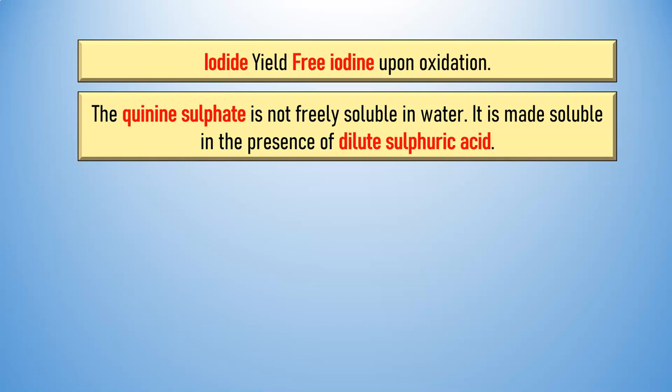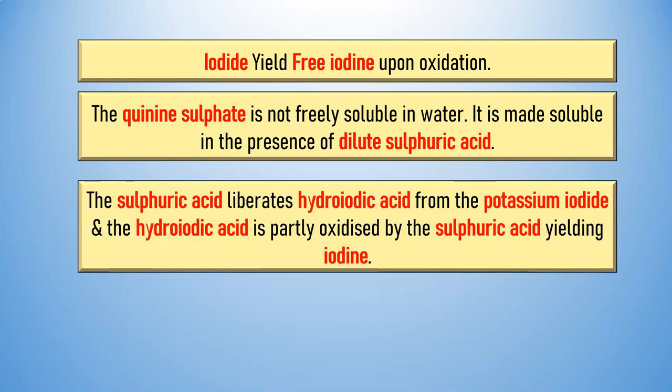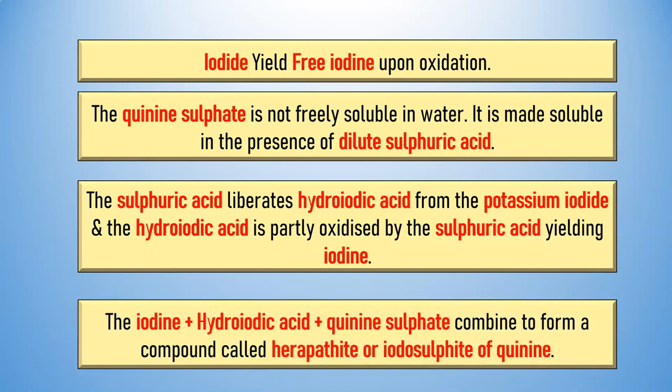Quinine sulfate is made soluble in the presence of dilute sulfuric acid. The sulfuric acid liberates hydroiodic acid from potassium iodide, and the hydroiodic acid is partly oxidized by the sulfuric acid, yielding free iodine. The iodine, hydroiodic acid, and quinine sulfate together combine to form a compound called Heropatite or Iodosulphite of Quinine, also known as the Heropat reaction for quinine.